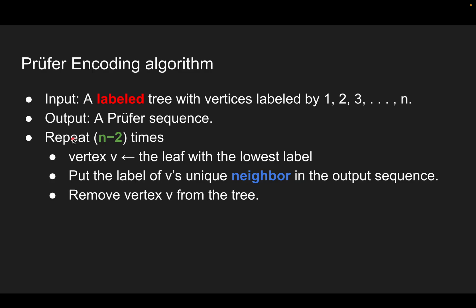The algorithm repeats n minus 2 times. First, we look for the vertex which is the leaf node with the lowest label. Second, we put the label of that leaf node's unique neighbor in the output sequence. Third, we remove the vertex from the tree. Repeating these three actions n minus 2 times will result in a Prüfer sequence with length n minus 2.